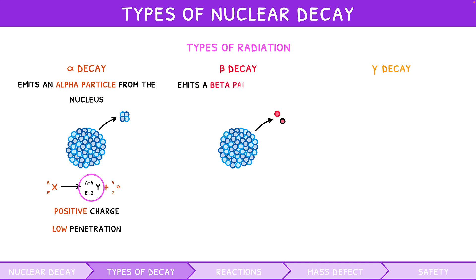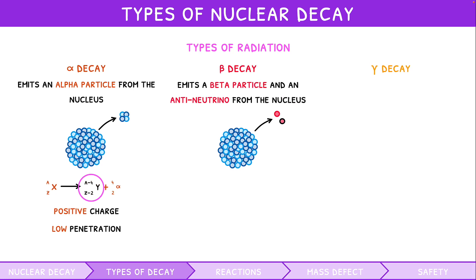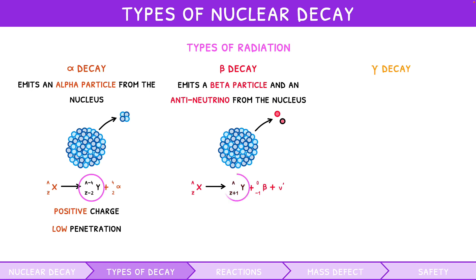Beta decay emits a beta particle — i.e., a high-energy electron — and an anti-neutrino from a nucleus, by converting a neutron into a proton. Anti-neutrinos will be covered in our third IB Physics Topic 7 video. The general equation is given by the initial atom decaying into a new atom plus an electron and an anti-neutrino. The new atom's notation reflects the conversion: you add 1 to the atomic number. Since it is an electron, beta decay has a negative charge, and since it is a smaller particle, it has an intermediate penetration depth.